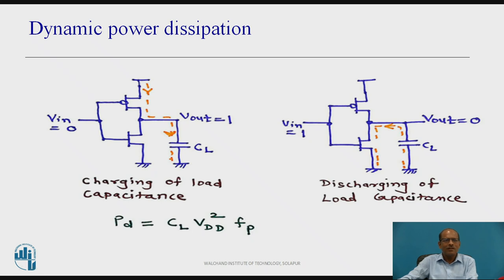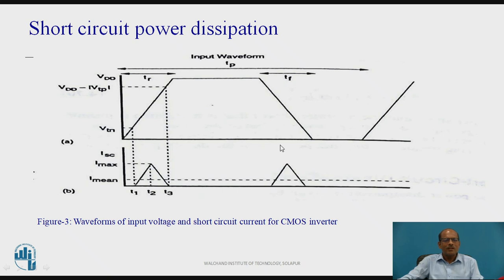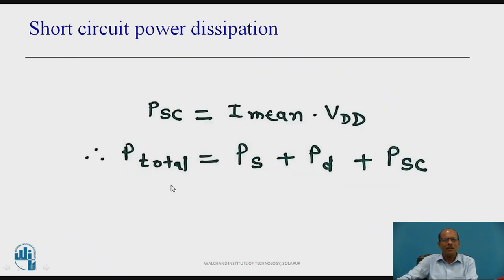Short circuit power dissipation is the power dissipated at the time of switching. The waveform shows input voltage and the corresponding short circuit current. When input is between VTN and VDD minus VTP, the short circuit current flows. The short circuit power dissipation is given by PSC = Imax × VDD. Therefore, total power dissipation is the sum of static power dissipation, dynamic power dissipation, and short circuit power dissipation. Of all these components, dynamic is dominant, short circuit is about 10 to 20 percent, and static is very small.